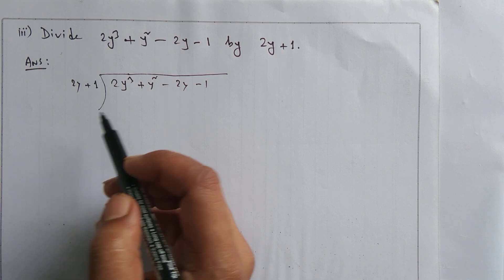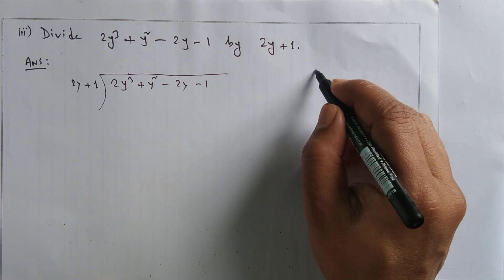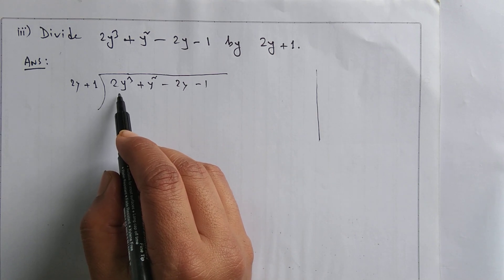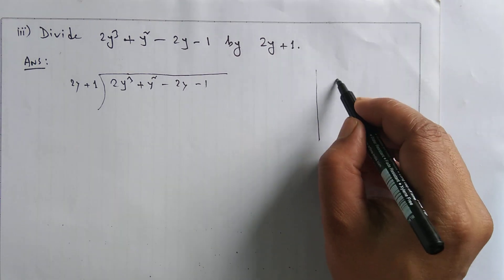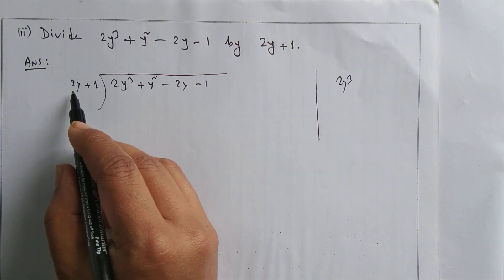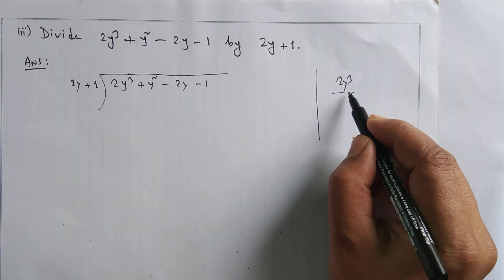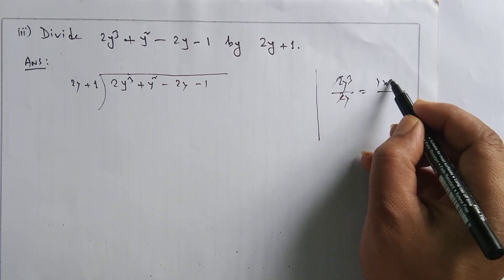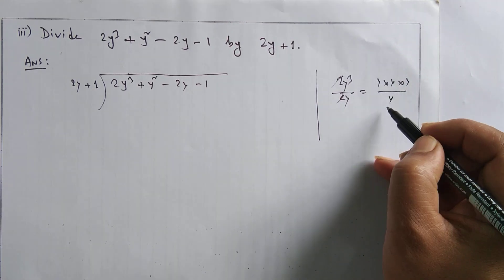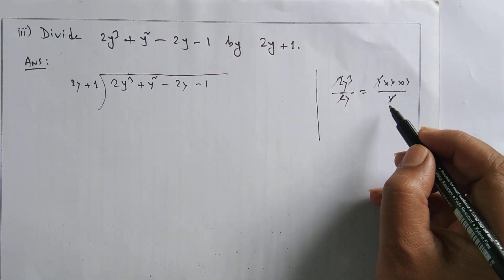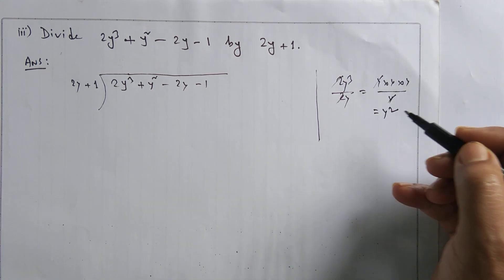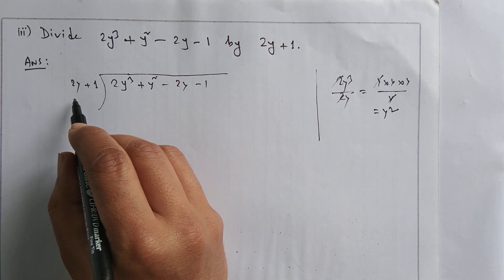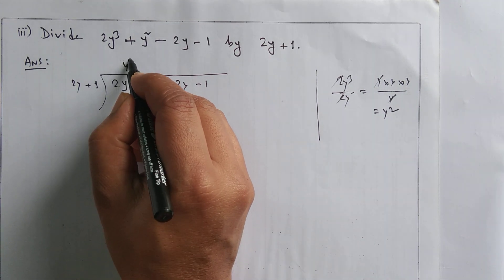Try to understand the steps explained. Take the first term in the dividend, which is 2y³, and the first term in the divisor, which is 2y. The 2s cancel, y³ means y × y × y, and one y cancels, so it goes y² times. That means 2y³ divided by 2y gives y².